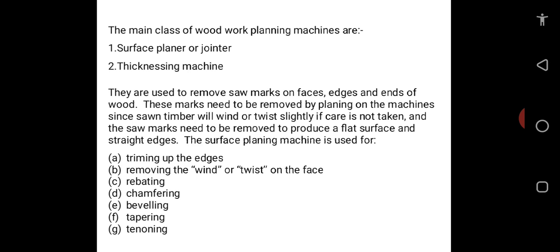The two main classes of wood planing machines are called the surface planer or jointer, and the second one is called the thicknessing machine. These two machines are used for planing operations of woods, and the planing operation is carried out after sawing of the woods. The planing machines are used to remove saw marks on faces, edges, and ends of woods, to produce a flat surface and straight edges.